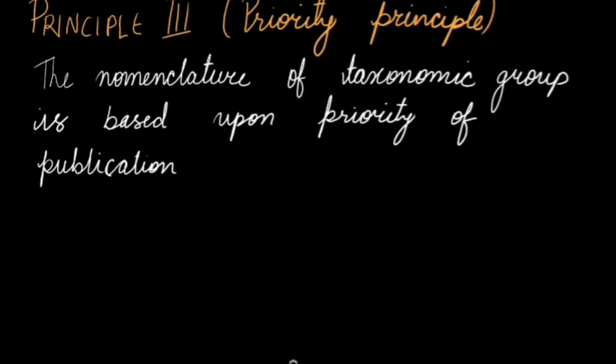It states that the nomenclature of taxonomic groups is based upon priority of publication, which basically means that if a plant specimen was given two different names by two different people, the one who has given the name earlier will be considered. The name that was given has to be fulfilling all the criteria of the code; it has to be validly and legitimately published.